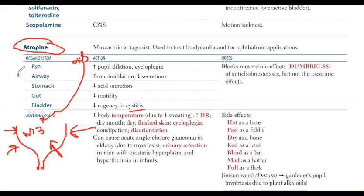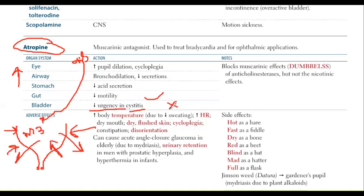Cholinergic agonists were increasing urination, and their therapeutic use was urinary retention — when the patient was unable to hold urine, we gave drugs like bethanechol, carbachol, or pilocarpine. But for atropine, we give this drug when the patient is having excessive urination in the case of cystitis. We have to relax the detrusor muscle so the patient will not get an urge to urinate — meaning we are decreasing the process of micturition. Micturition is the feeling or act of urination.